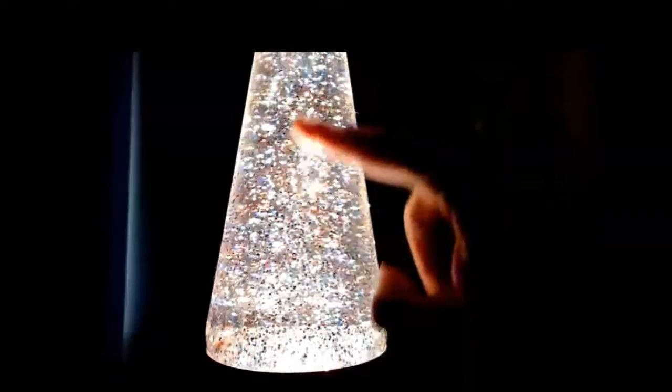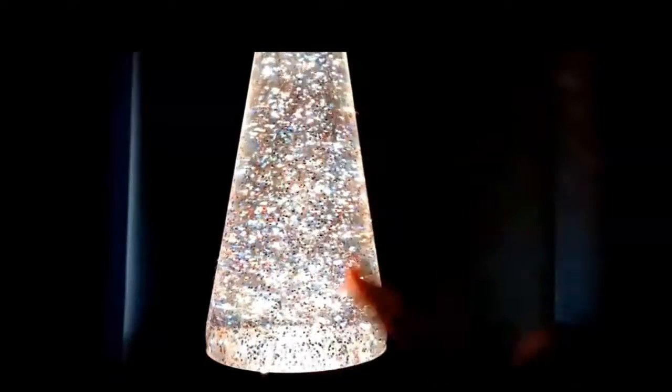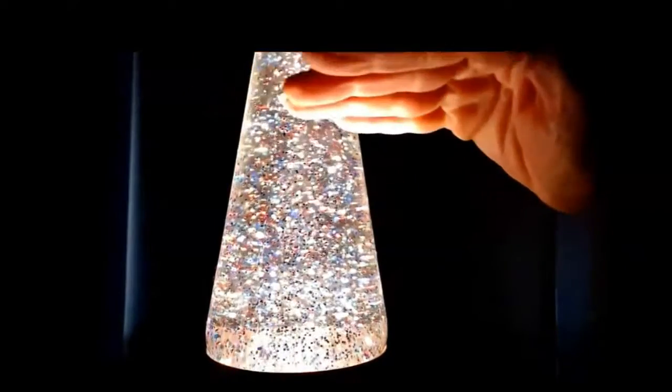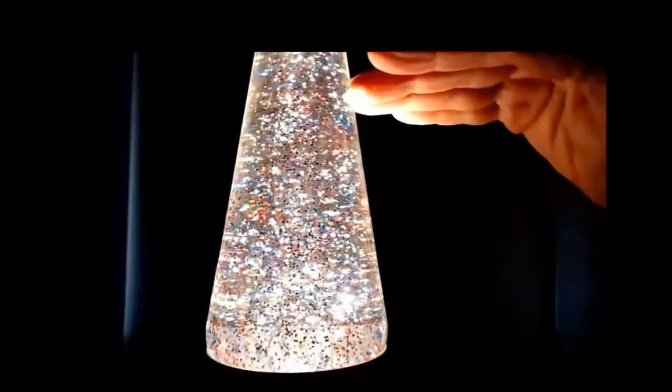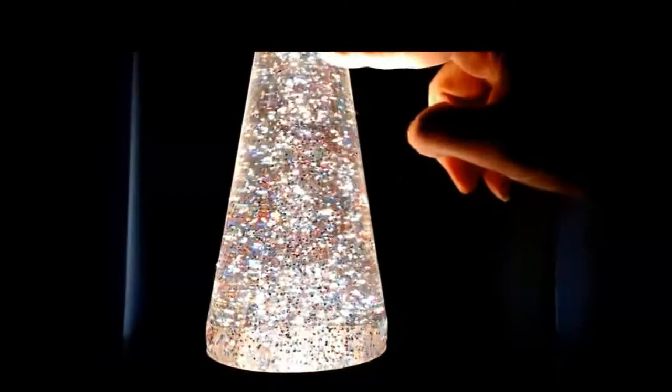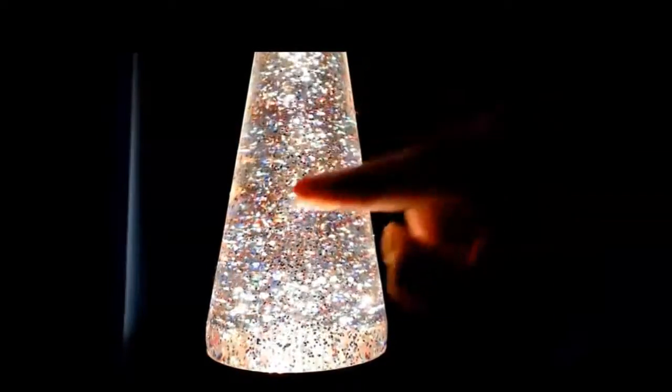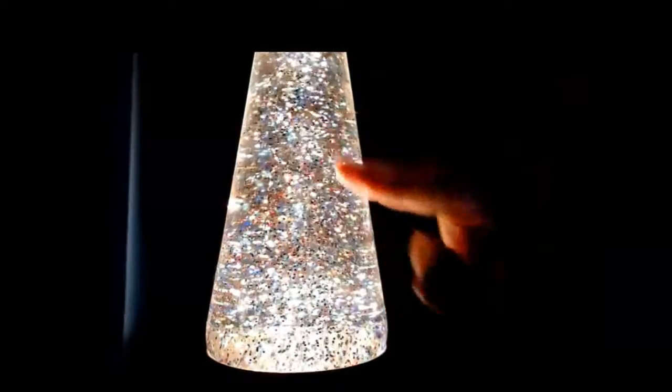And as this circular motion of the convection currents occurs, it moves the lithosphere along with it. So you wind up having all of the tectonic plates moving up here because of this circular motion that happens in the mantle.